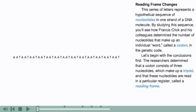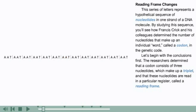This series of letters represents a hypothetical sequence of nucleotides in one strand of a DNA molecule. By studying this sequence, you'll see how Francis Crick and his colleagues determined the number of nucleotides that make up an individual word called a codon in the genetic code. The researchers determined that a codon consists of three nucleotides, which make up a triplet, and that these nucleotides are read in a particular register called a reading frame.